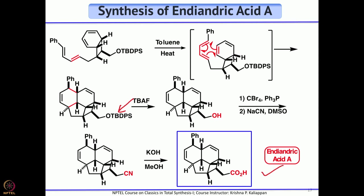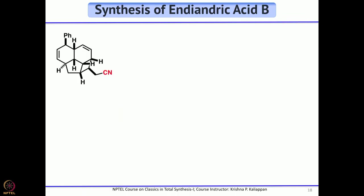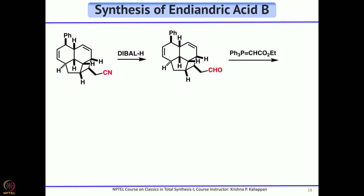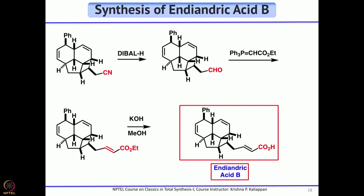From the same intermediate, to obtain endiandric acid B: reduce the cyanide with DIBAL to get the aldehyde, then use a stabilized Wittig reaction to get the alpha-beta unsaturated ester; hydrolysis of the ester gives endiandric acid B. From this common intermediate the Nicholas group successfully synthesized both endiandric acid A and endiandric acid B.